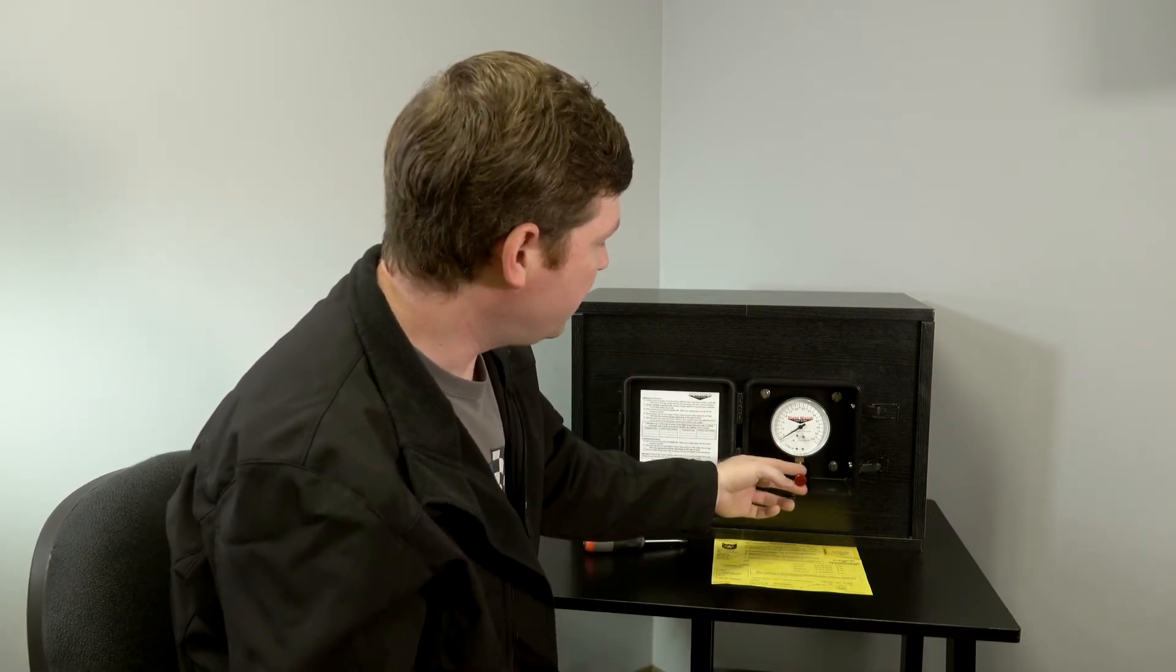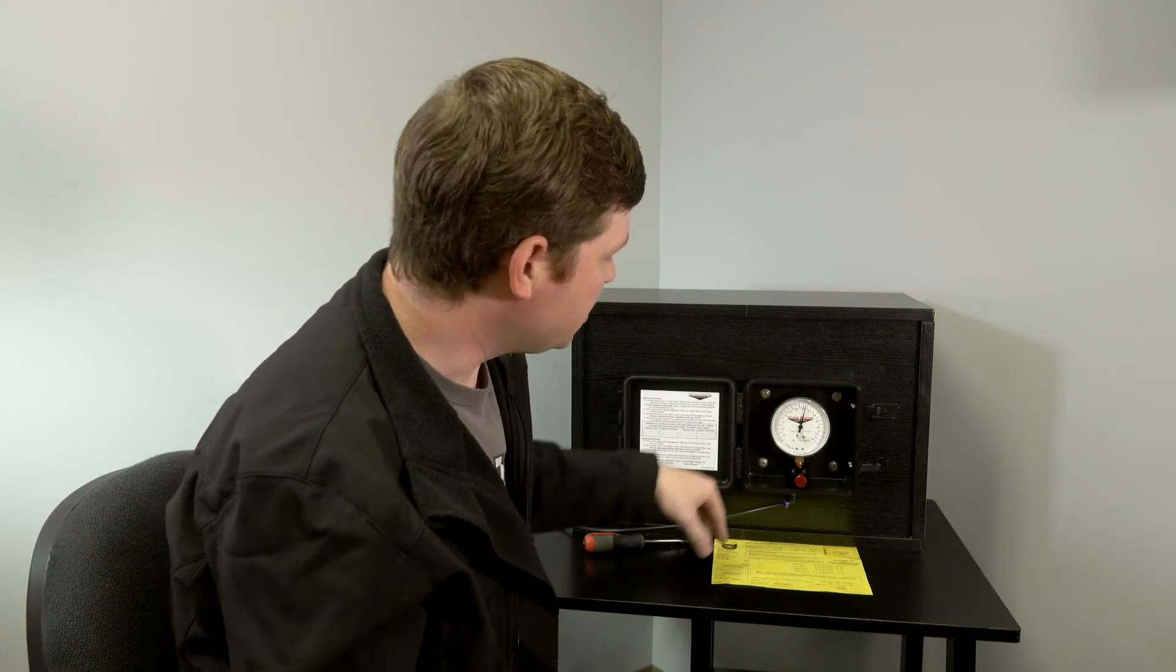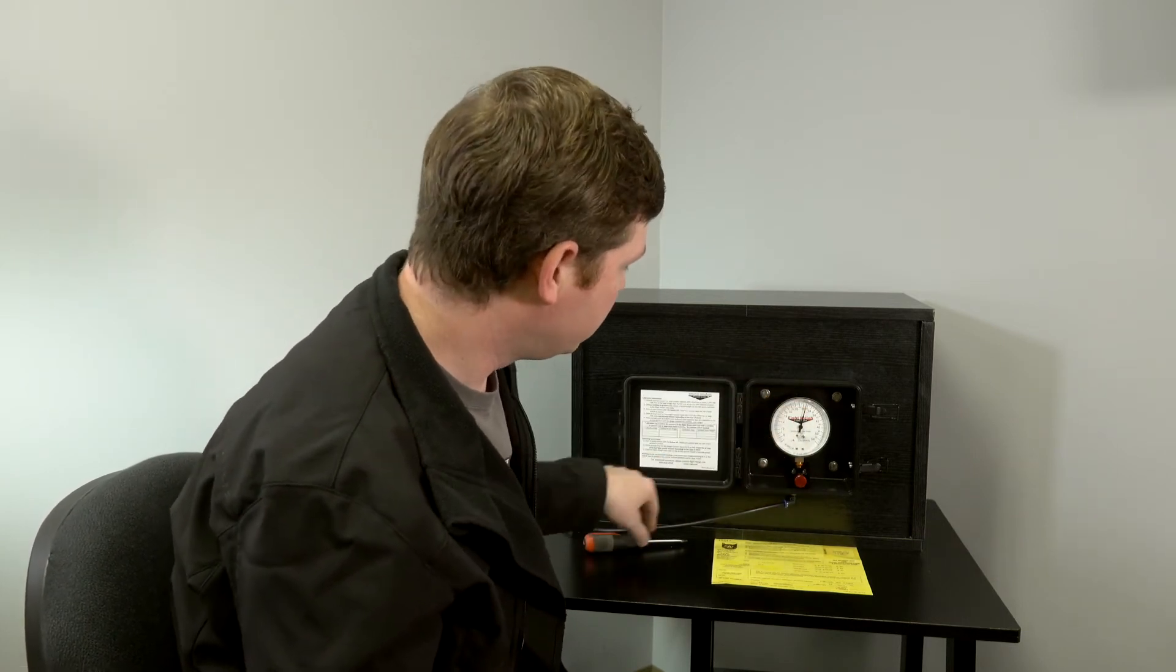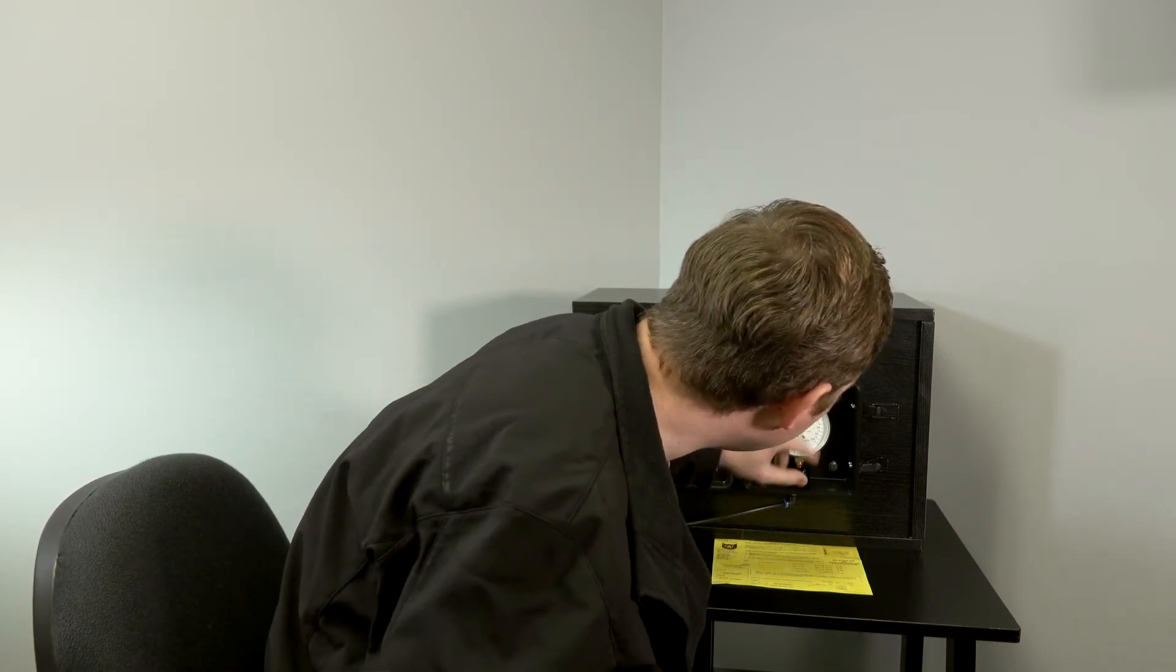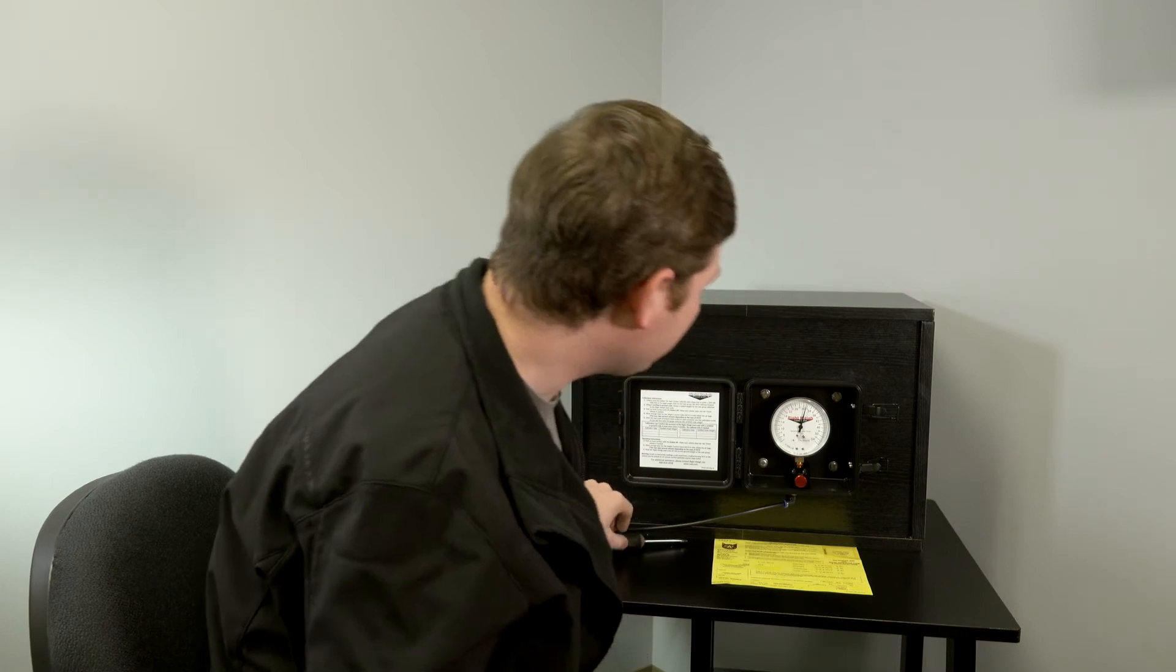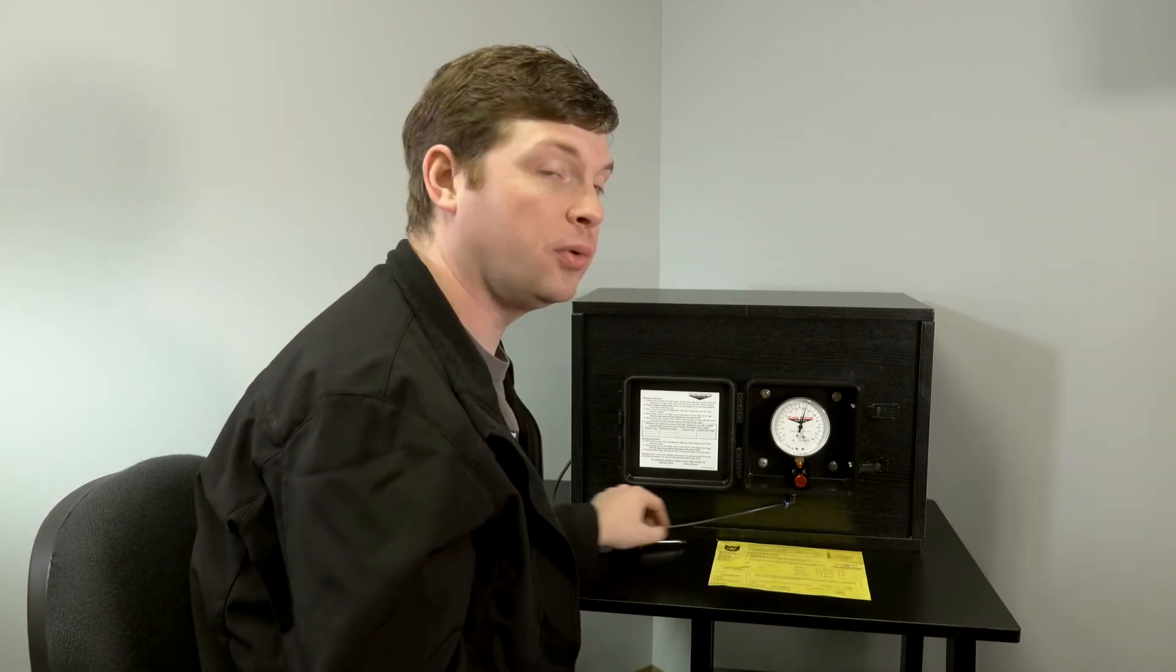And then when you pull out the red knob here, the gauge will come up and it'll say how much weight you've got on there. Right now we're sitting at 31,000 and some change, and our cat scale ticket says 33,100.